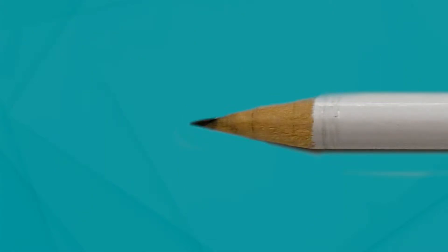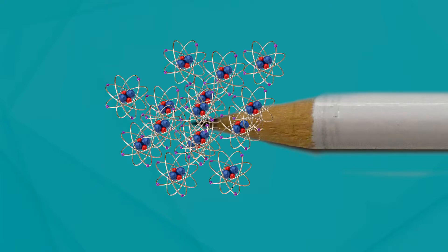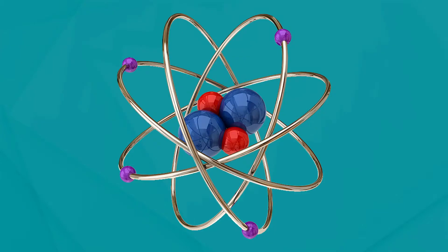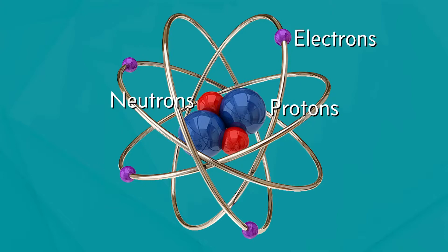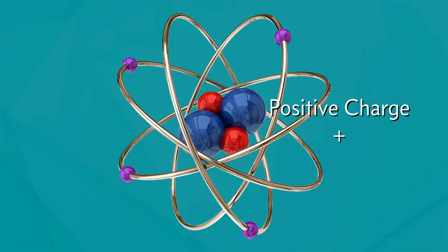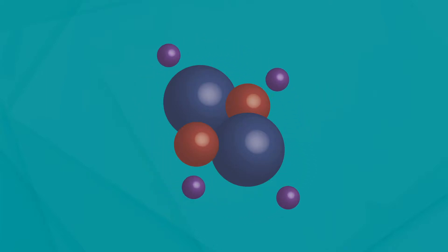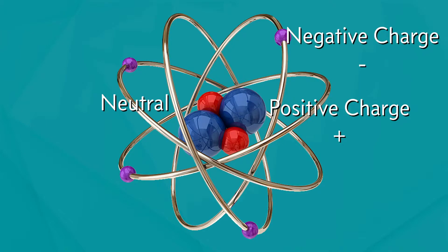Atoms are so small that the tip of a pencil is made up of billions of atoms. An atom has three smaller particles: protons, neutrons, and electrons. The center of an atom is called the nucleus. The nucleus is made up of protons and neutrons. Protons have a positive charge and neutrons are neutral — they have no charge. Electrons are much smaller than protons or neutrons and they are constantly spinning around the nucleus in shells. Electrons have a negative charge.